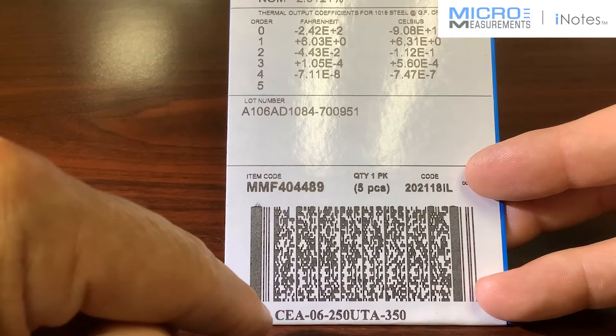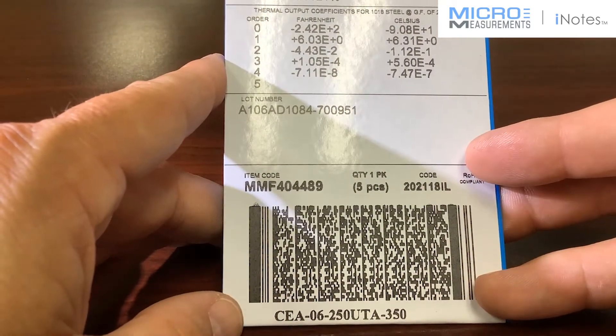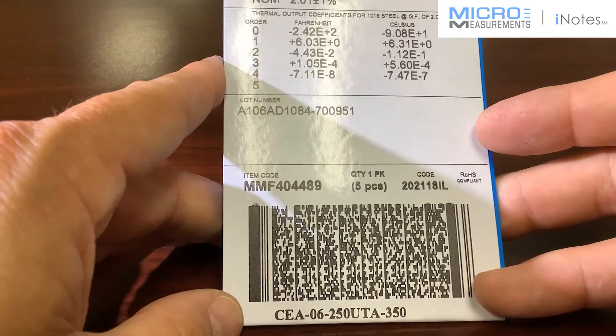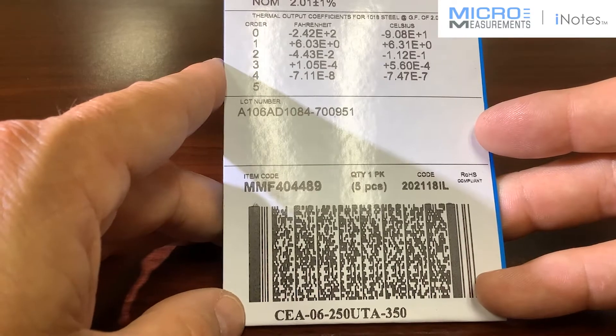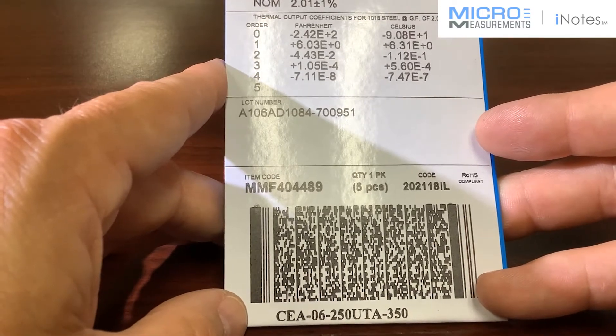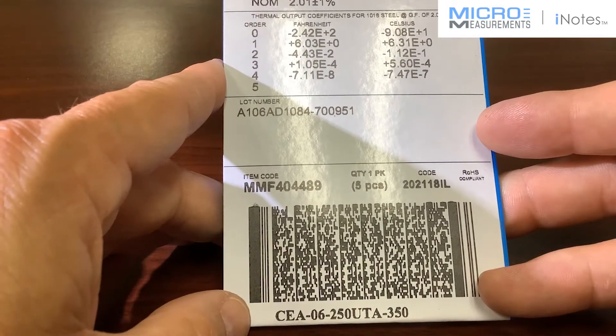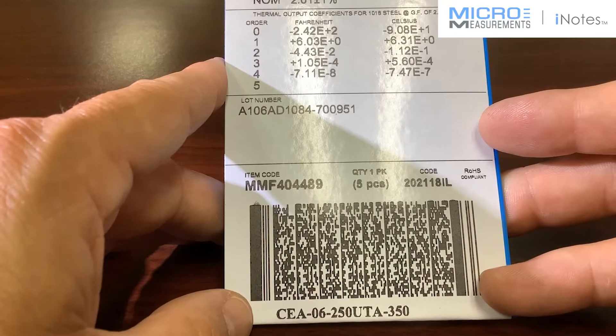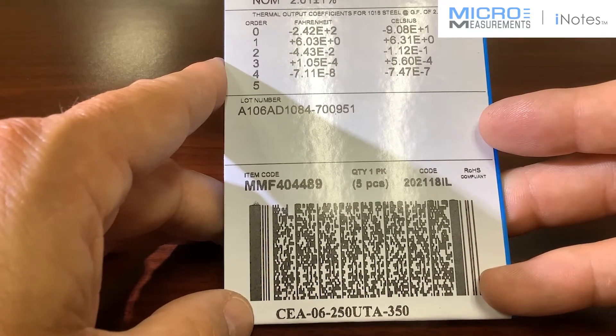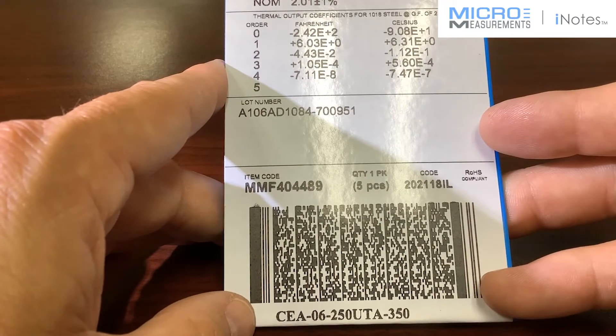It's a CEA-06-250UTA-350, and when you see that A at the end of the gauge pattern, what that means is that it's one of these new strain gauges using the advanced sensors technology. It's a new technique that we use for adjustment of the resistance of the strain gauge, and it helps to make the resistance tolerance tighter. It also helps to make the gauges more consistent from one to the next.